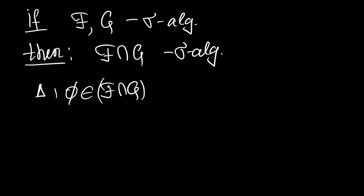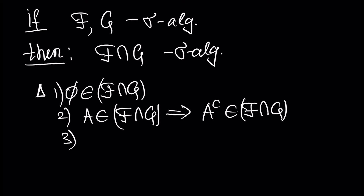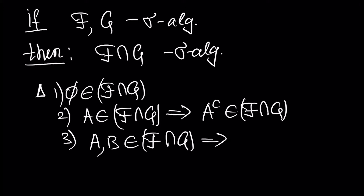Next, the second part: we have to show that if A is inside this intersection, then the complement is also inside this intersection. And the last part is: if two sets A and B are inside this intersection, then the union of A and B is also inside the intersection.